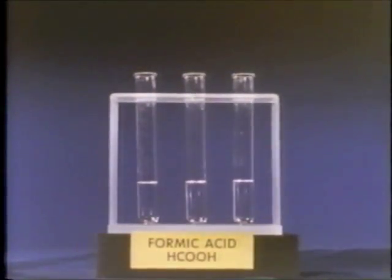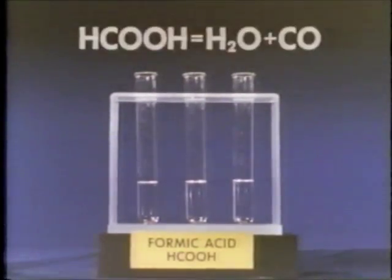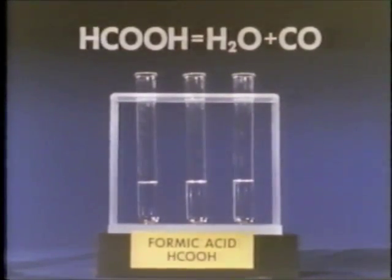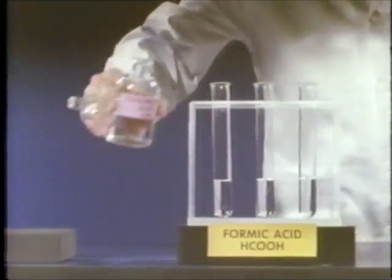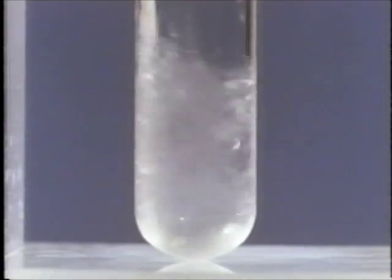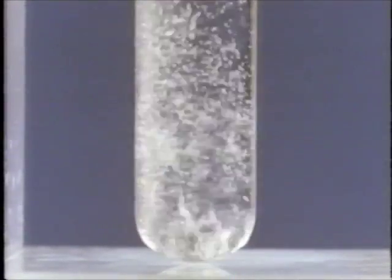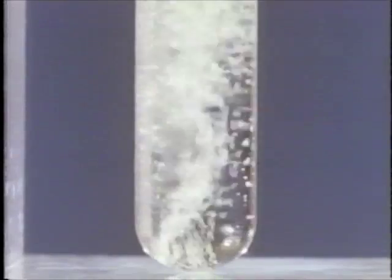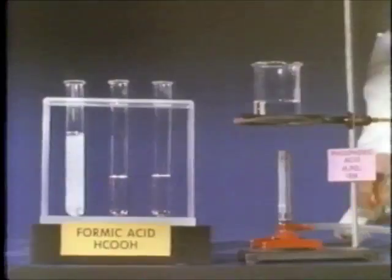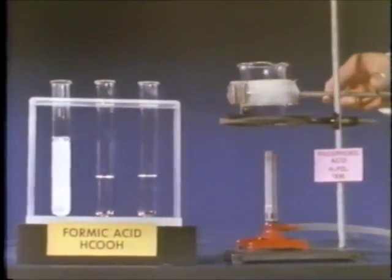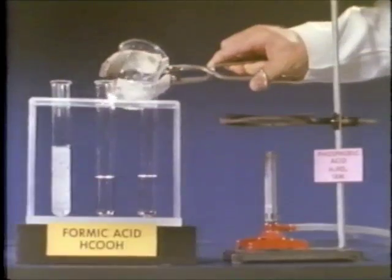However, one well understood example of catalysis is the decomposition of formic acid. The equation for the net reaction reads: formic acid gives water and carbon monoxide. At room temperature decomposition occurs, but much too slowly to be seen. Adding concentrated sulfuric acid to the formic acid leads to rapid decomposition, as shown by the generation of carbon monoxide gas. Experiment shows sulfuric acid is not consumed — it is acting as a catalyst. Other acids, such as phosphoric, also catalyze the decomposition.